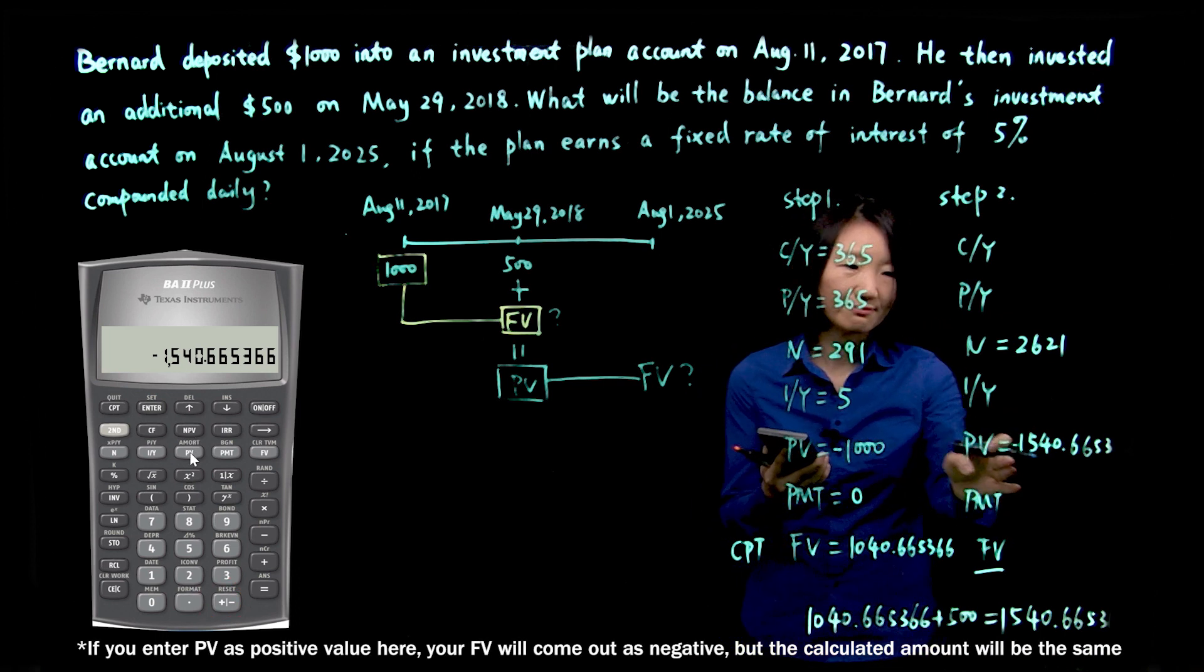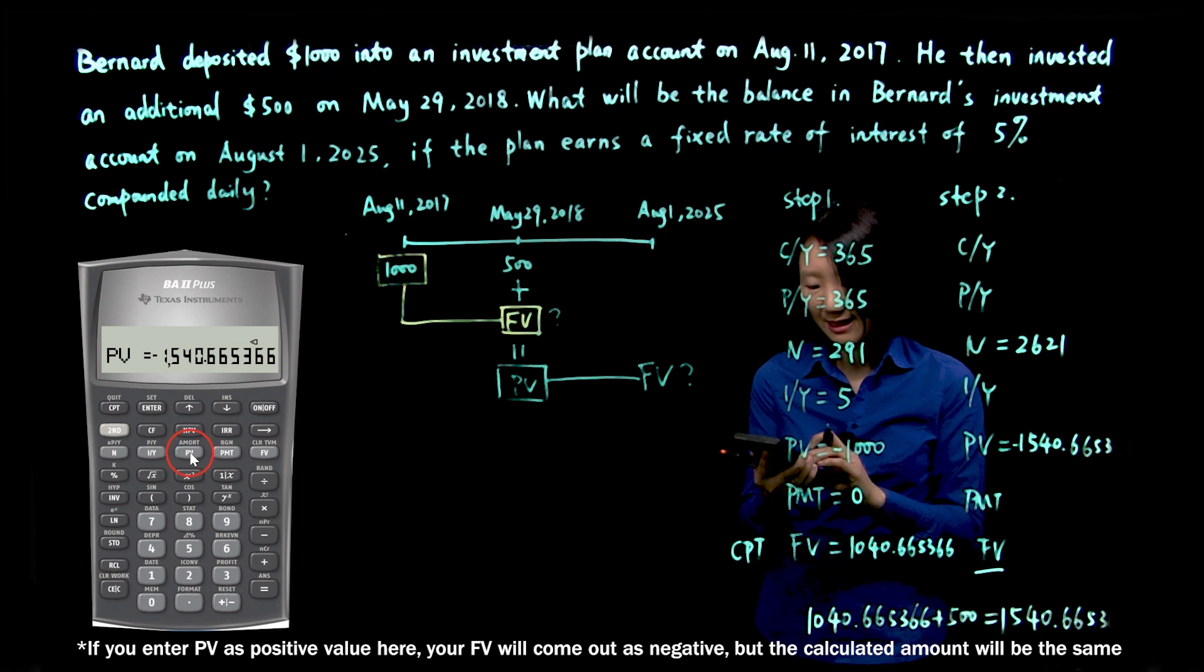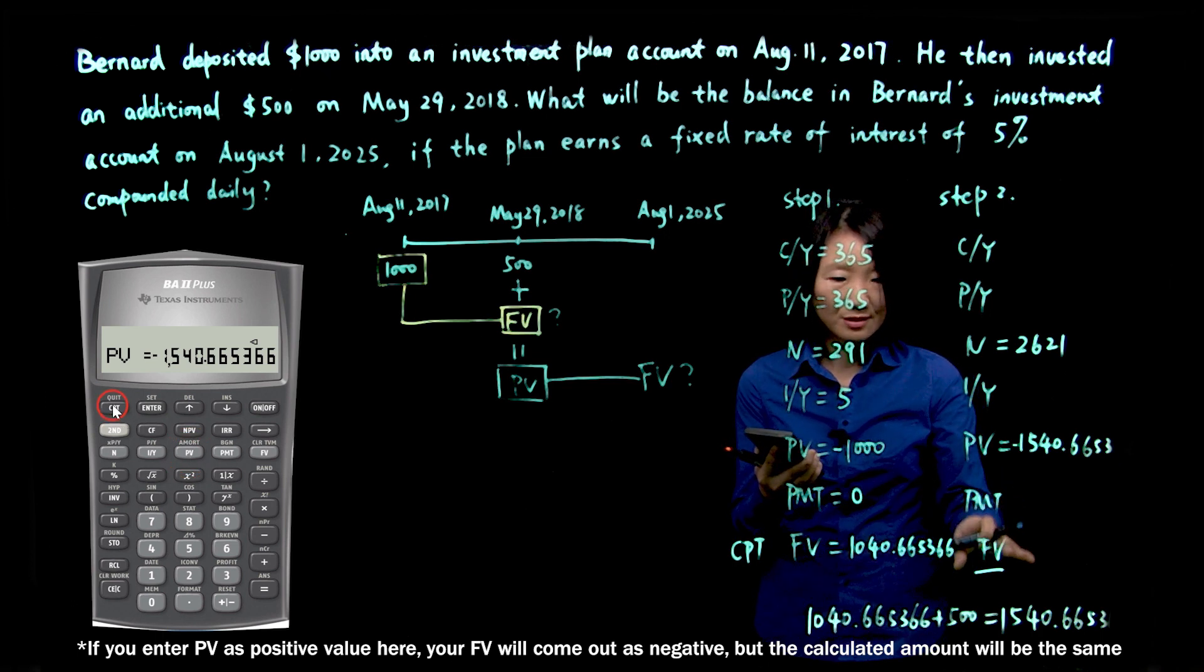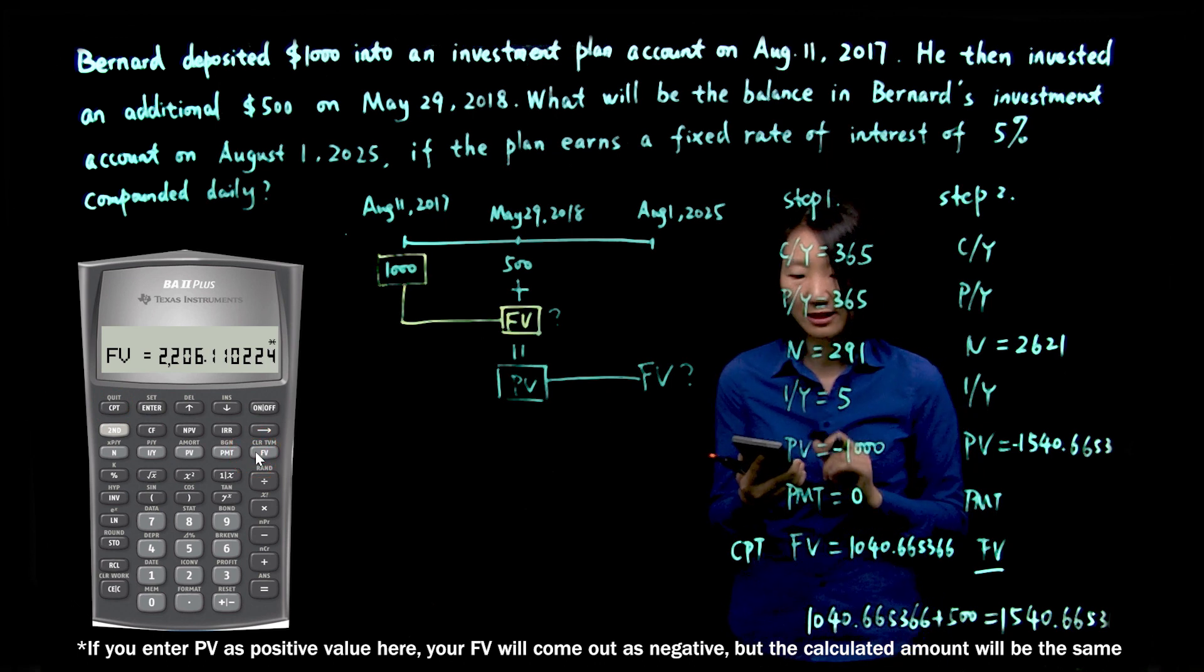You don't have to, but it's fine. We'll make it negative. PMT is still zero, and let's compute future value.